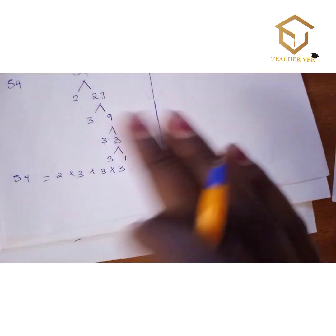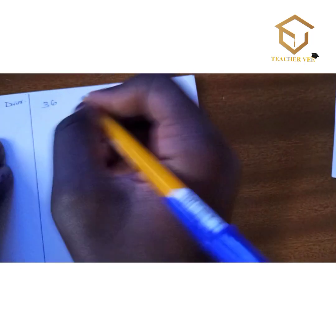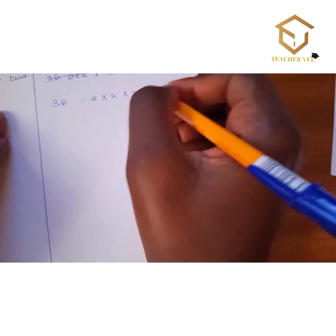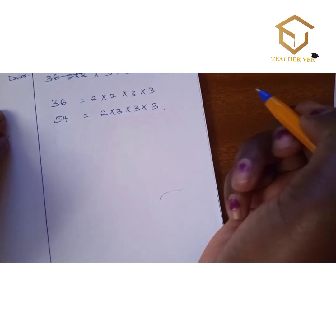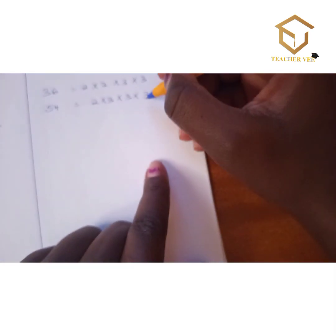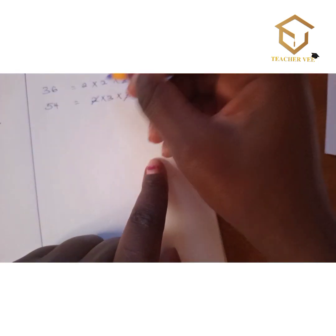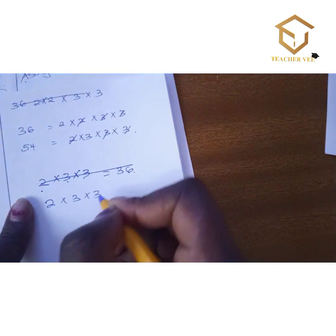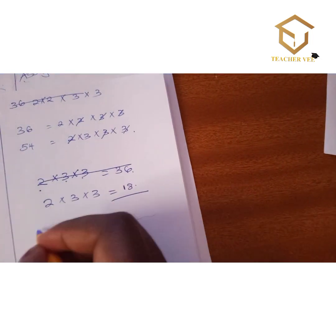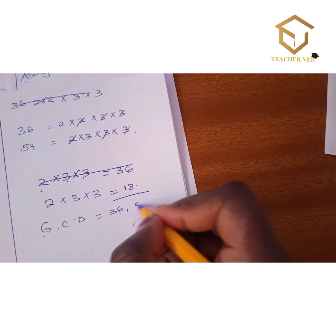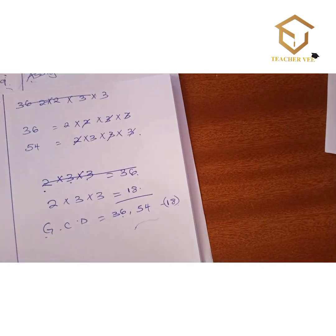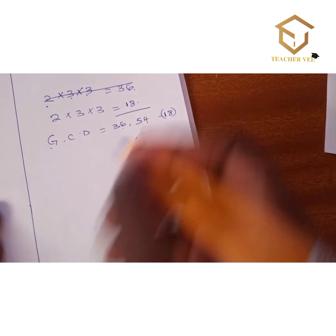Now identify the common factors. The factorization of 36 is 2 × 2 × 3 × 3, and the factorization of 54 is 2 × 3 × 3 × 3. The common factors are one 2, one 3, and one 3. Multiplying the common factors: 2 × 3 × 3 = 18. Therefore the GCD of 36 and 54 is 18.